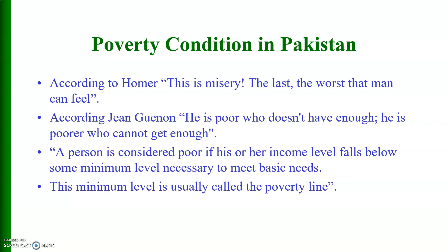According to Todaro, regarding the three core values of development, a person or household would be poor if it lacks sustenance — that is, if it cannot meet basic needs — and secondly if it lacks self-esteem, and thirdly if there is no freedom from servitude. Sustenance, self-esteem, and freedom from servitude are considered core values of development. If they are absent or missing, then the household or individuals will be victims of poverty.